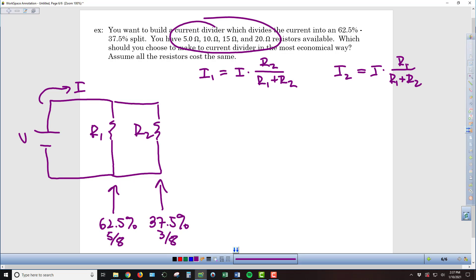So I need this fraction here to equal 5 eighths, so that I get 5 eighths of the current from the battery flowing through I1. And then I need this fraction here to equal 3 eighths. So what I can do is similar to what we did with the voltage divider previously.